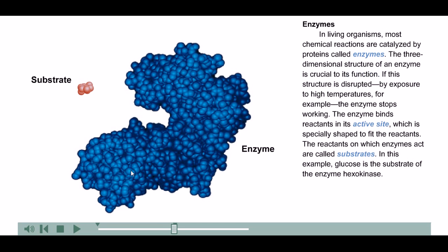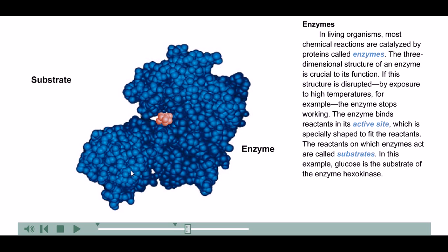In living organisms, most chemical reactions are catalyzed by proteins called enzymes. The three-dimensional structure of an enzyme is crucial to its function. If this structure is disrupted by exposure to high temperatures, for example, the enzyme stops working. The enzyme binds reactants in its active site, which is specially shaped to fit the reactants. The reactants on which enzymes act are called substrates. In this example, glucose is the substrate of the enzyme hexokinase.